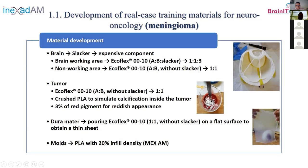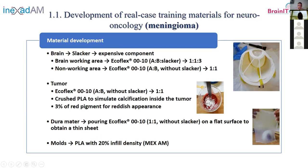Around the brain we have the duramater — the meninges. To produce that, we poured some silicone on a flat surface and obtained a thin sheet that we placed over the brain. We did the molds using 3D printing with material extrusion in PLA. The general process was: start with CT images, perform segmentation in 3D Slicer software, obtain the 3D STL model, do CAD design features, obtain the final STL, 3D print it, and produce the final synthetic models by pouring the silicones.